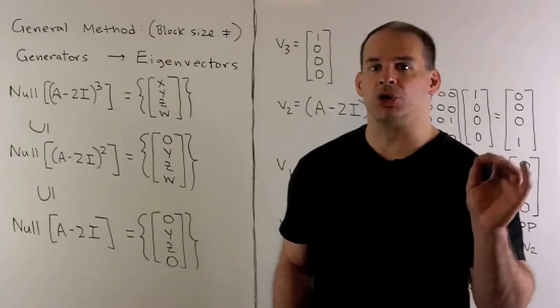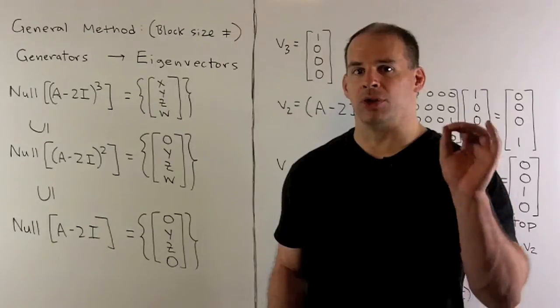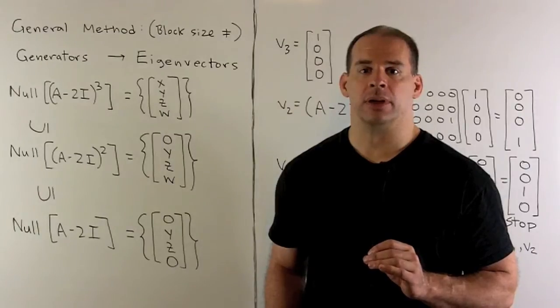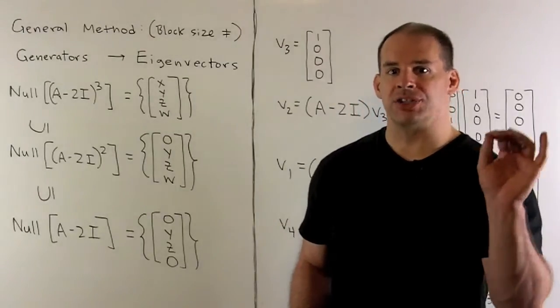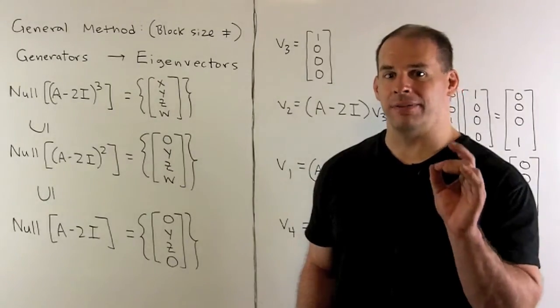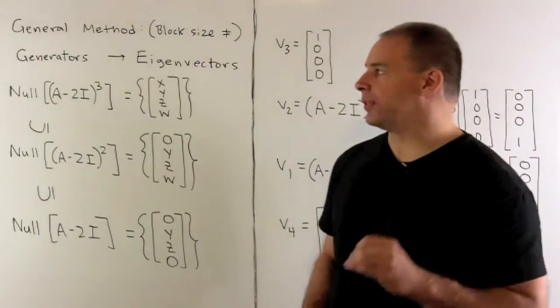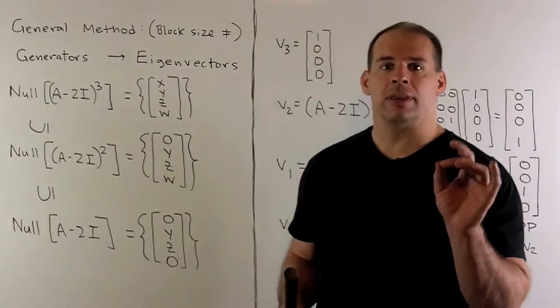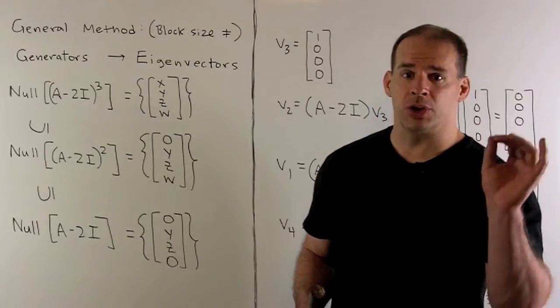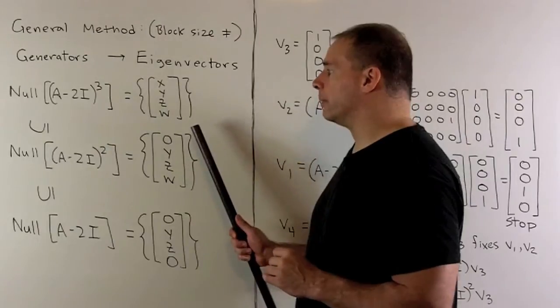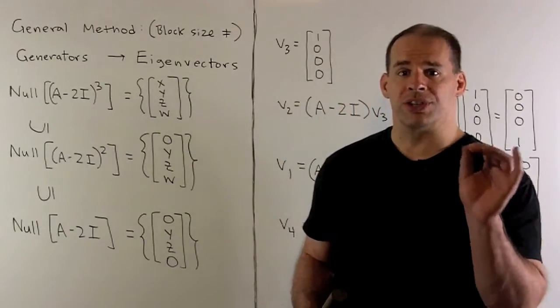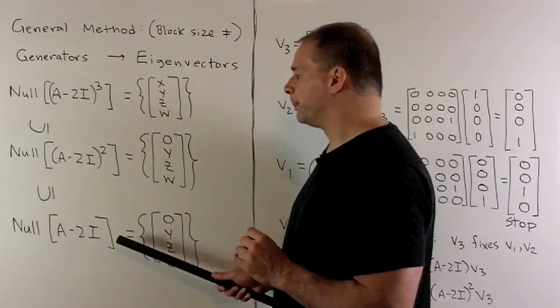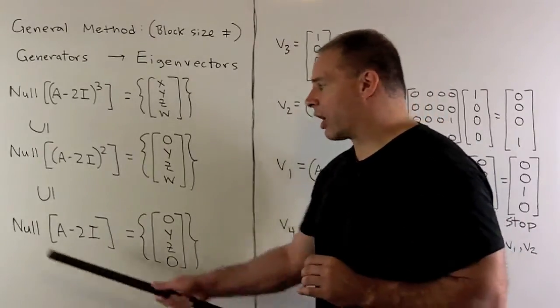If we want to get our Jordan form in the first shot, instead what we do is we look for generators for each Jordan block, and then we can work our way down to each eigenvector. To do that, we're going to set up a series of null spaces. If we fix an eigenvalue, I'm going to start with the null space. We have the factor for our eigenvalue raised to the exponent that appears in the minimal polynomial. In our special case, that's going to be all of R^4. Then, we're going to set up the null spaces for the lower powers. So it gives us a chain of inclusions. At the bottom, we're going to have our eigenspace.